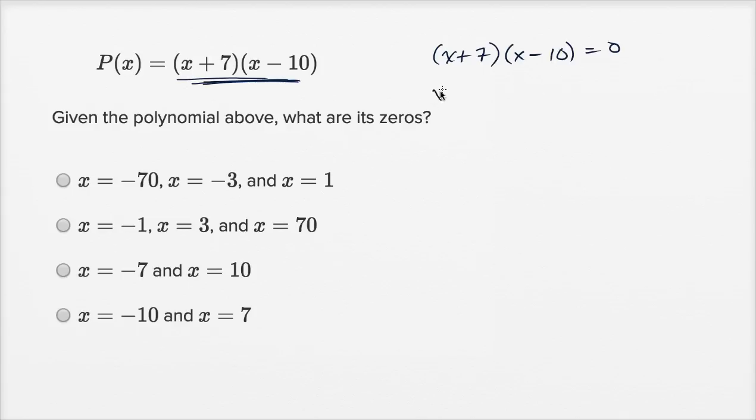So x plus seven could be equal to zero. Or another way to solve this is for x minus 10 to be equal to zero.